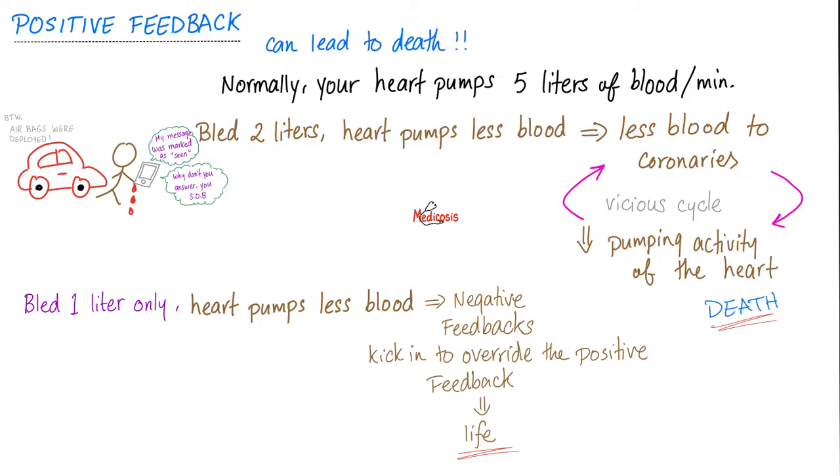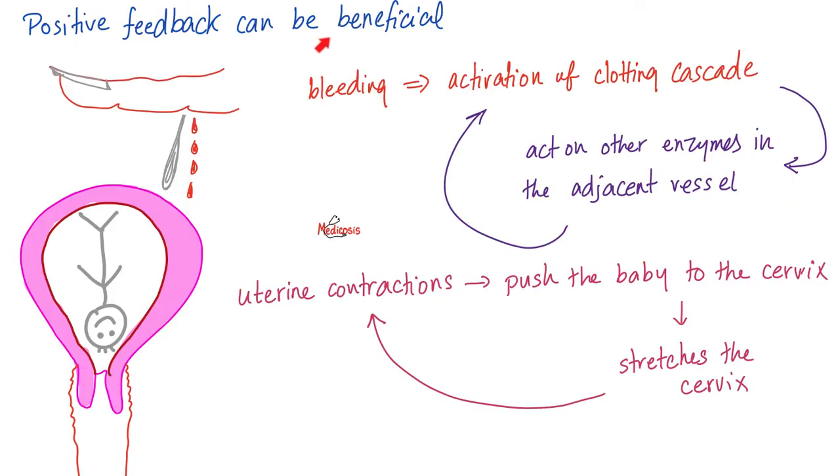Positive feedback can destroy you because it has explosive effects. It's a vicious cycle that doesn't end. A increases B, which increases A, which increases B. This is explosive. There are a few examples of positive feedback in the body. Example number one, bleeding. When you bleed, you activate your clotting factors, which will stimulate one another.